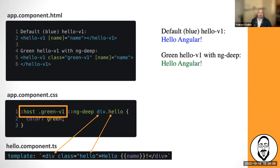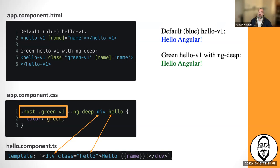Notice that I'm prefixing the ng-deep rule with ':host' and 'green-version-one'. The reason is that ng-deep makes the CSS global — I don't want every div with class 'hello' in the entire application turning green. I want to localize it to just this particular instance of the component. That's the whole idea behind ng-deep: it makes the thing global, so you must prefix it with :host to contain the scope.